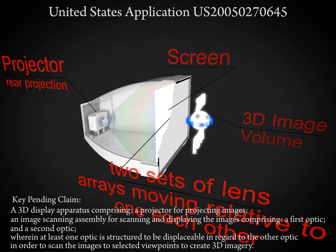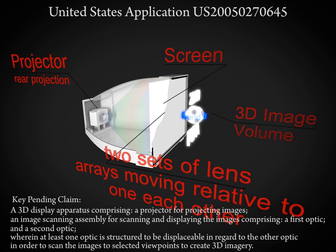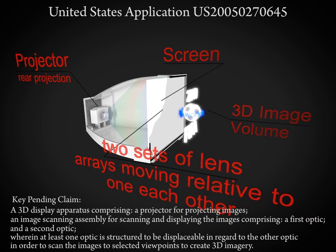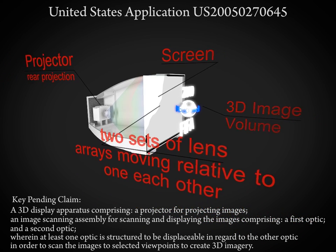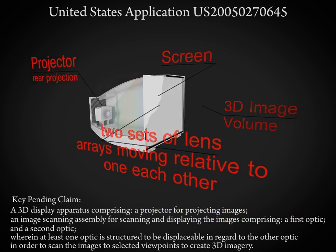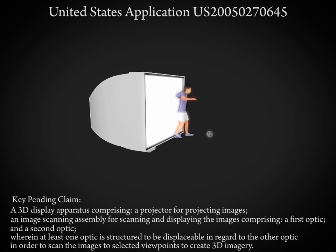What if you wanted a handheld auto-stereo display? One concept is to use a fast OLED backplane immediately behind the lens array system. We prototyped this at Actuality, and it worked very well. It is now owned by Optics for Hire.